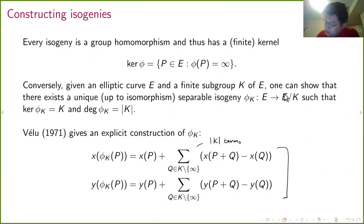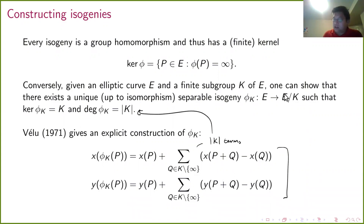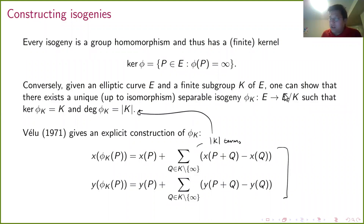Notice that the sum in Vélu's formula has as many terms as the cardinality of K, which is also the degree of the isogeny — just as the number of roots of a polynomial is the degree of the polynomial. So to implement Vélu's formula you need to sum over a number of terms equal to the degree of the isogeny. This is easy when the degree is small, but when the degree gets cryptographically large you can't do this directly — that's why large-degree isogenies are hard to work with.